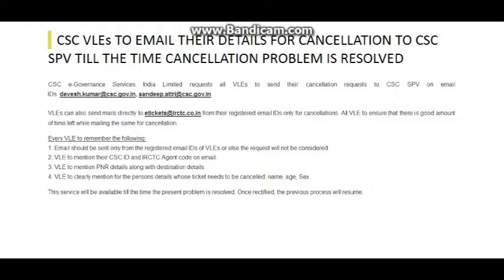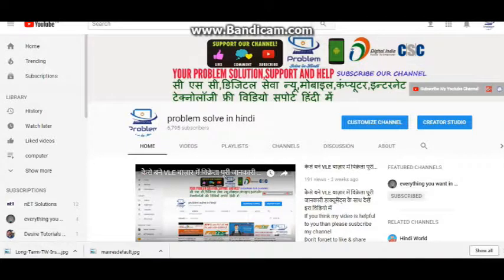You can see two email IDs: CACSPB and e-tickets IRCTC. If you have any problem with cancellation, you can contact them at CACSPB. If you have any questions, please comment on this video. We will see you in our next video. Thank you.